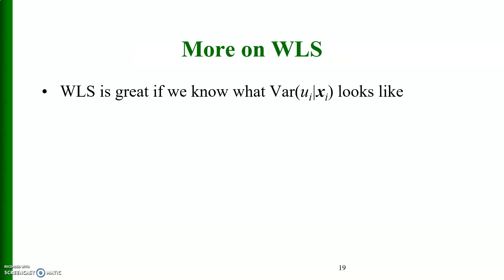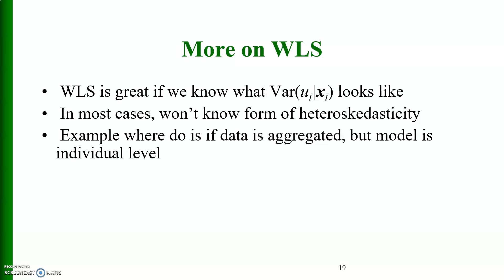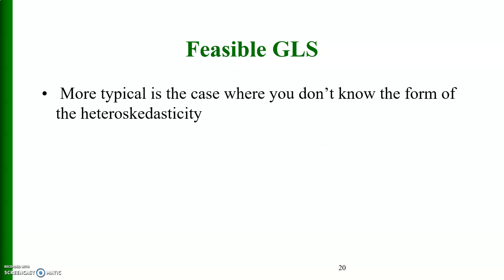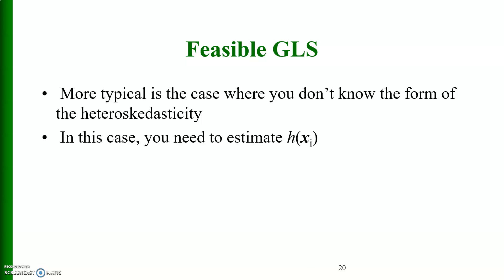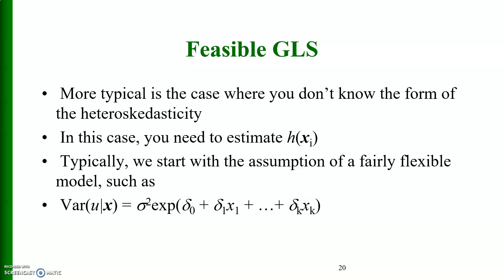Weighted least squares is great if we know what variance of u_i given x_i looks like, but in most cases we won't know the form of the heteroscedasticity. An example where we do know is if data is aggregated but the model is at the individual level — we want to weight each aggregate observation by the inverse of the number of individuals. More typical is feasible GLS, where you need to estimate h(x_i) using a flexible model such as variance of u given x equals sigma squared times exp(sigma naught plus sigma 1 x1 up to sigma k xk).